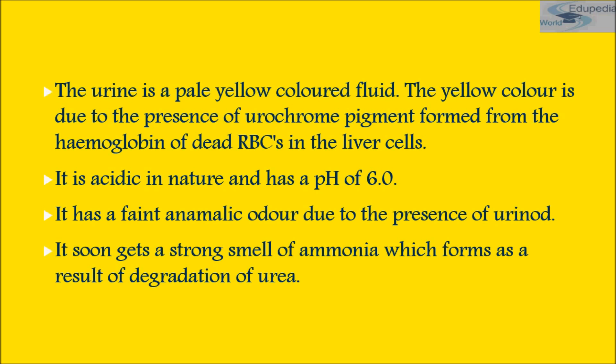Apart from all these, there are abnormal urine conditions. Glycosuria is the presence of glucose in urine and occurs in persons affected by diabetes mellitus. Hematuria is the presence of blood or blood cells in urine. Ketonuria is the presence of abnormally high ketone bodies in urine. Pyuria is the presence of WBCs or pus in urine. And uremia is the presence of excess urea in urine.